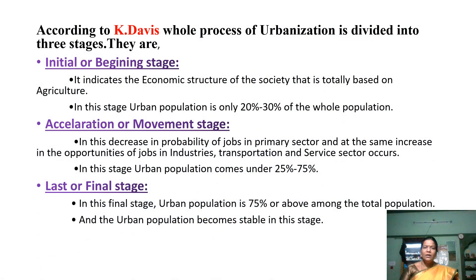According to K. Davis, the whole process of urbanization is divided into three stages: the initial or beginning stage, the acceleration or movement stage, and the last or final stage.